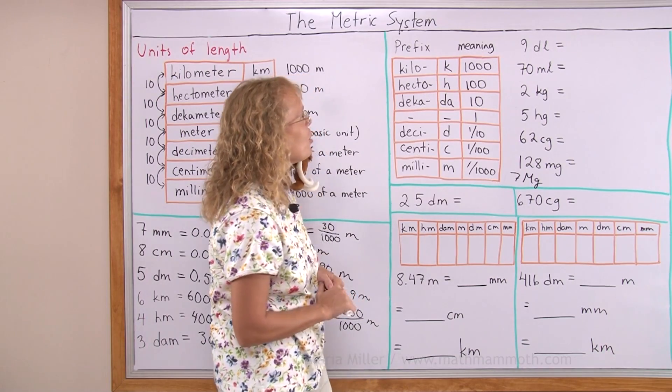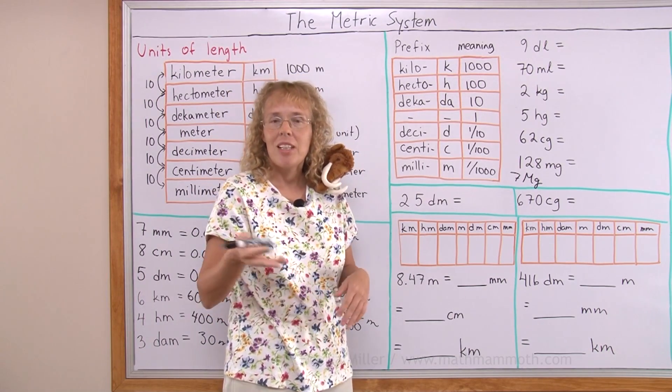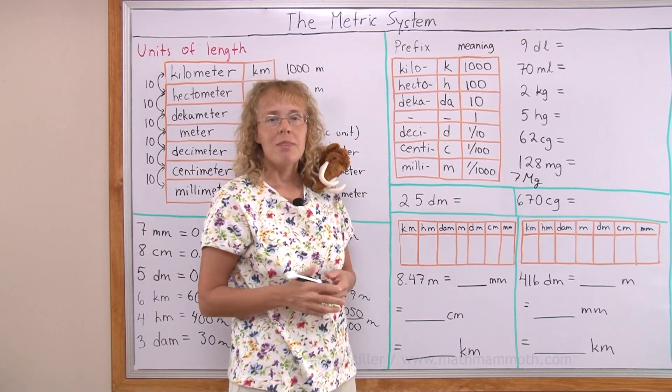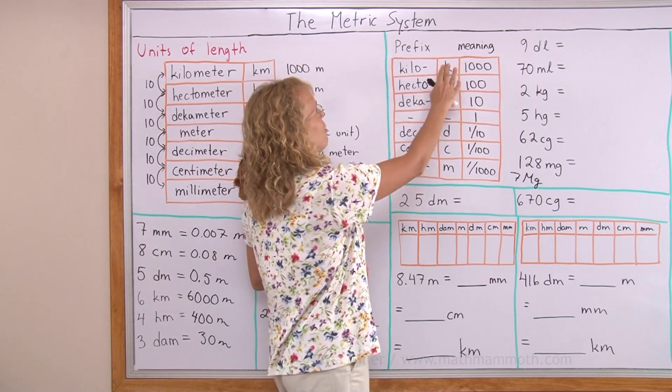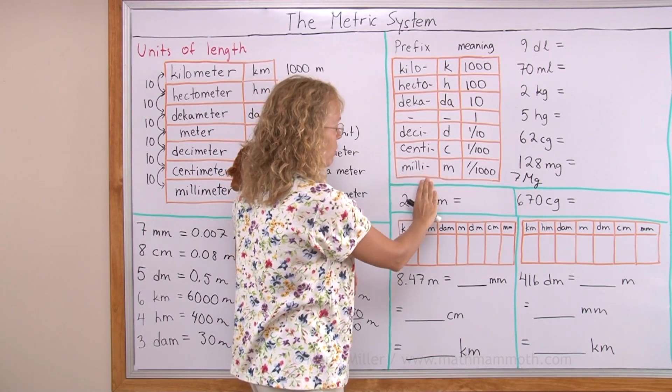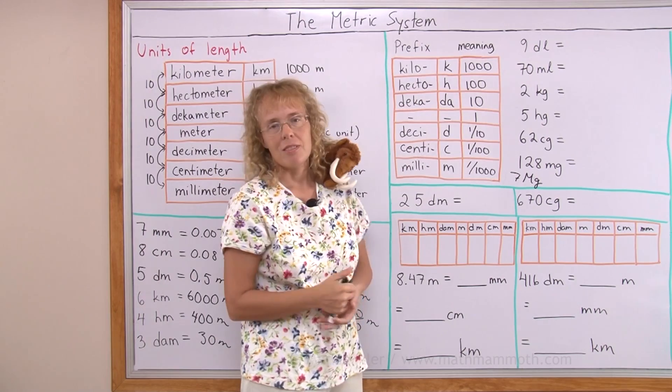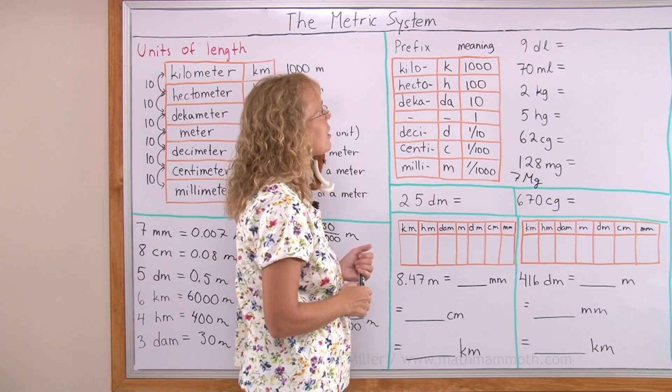Usually we would say that as seven thousand kilograms, by the way. And if you're into computers, you probably have heard of giga, tera, gigabytes, terabytes. Giga would be a billion, and so on. So there are other prefixes besides these, also towards the smaller numbers. But this is enough for fifth, sixth grade that we're studying this thing.